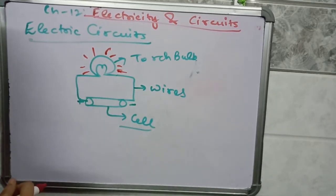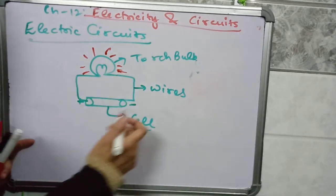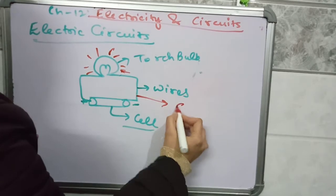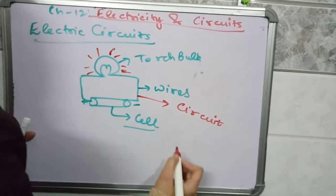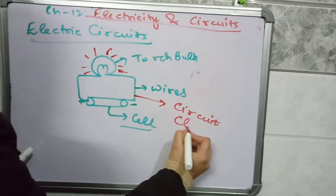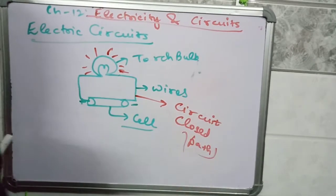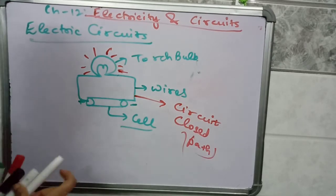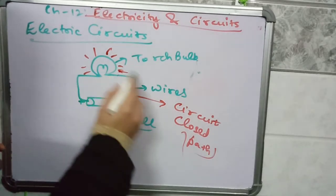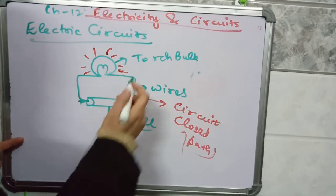So what have you done? You have made a circuit. And this circuit is a closed path in which current can flow.